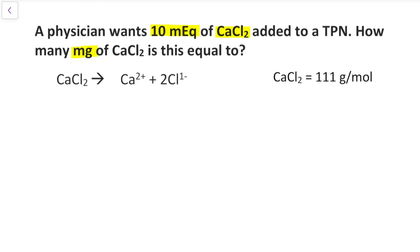We're going to start by calculating the molecular weight using the periodic table, which comes out to 111 grams per mole. Now let's calculate the valence.